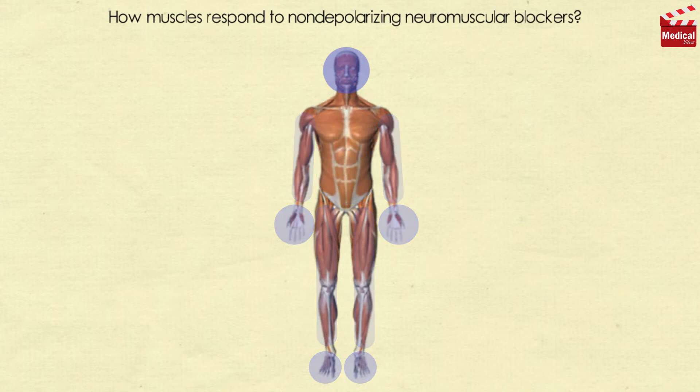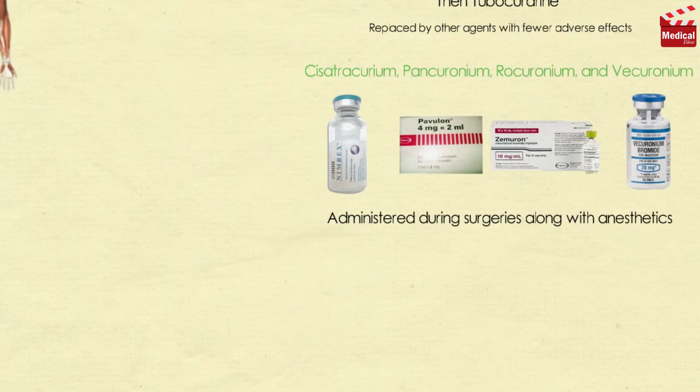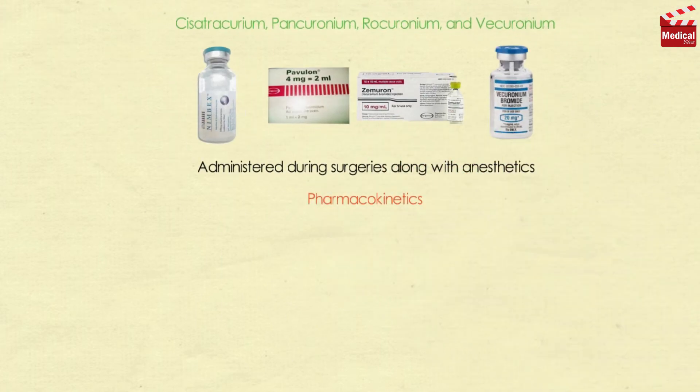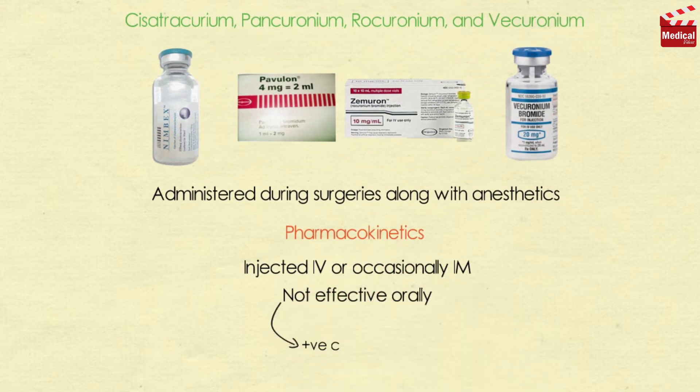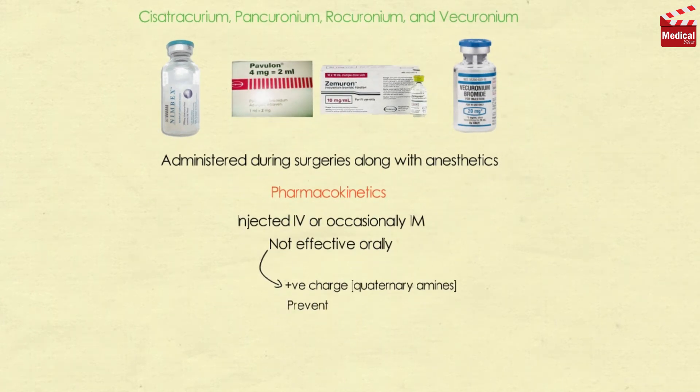Let's talk briefly about the pharmacokinetics of this group. All of these agents are injected intravenously or occasionally intramuscularly, since they are not effective orally. These agents are positively charged as they possess two or more quaternary amines in their structure that prevent their absorption from the gut.